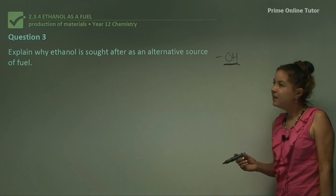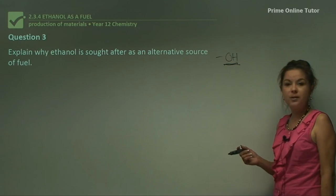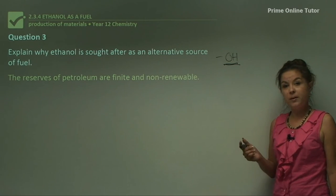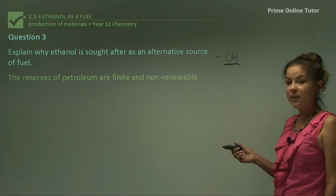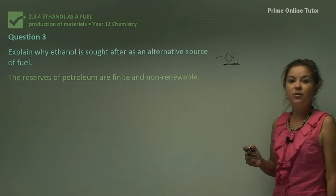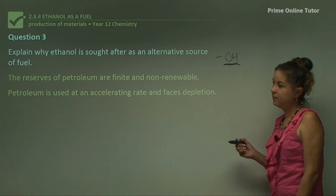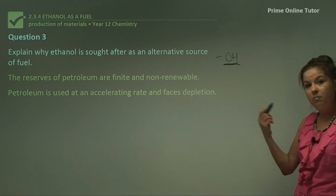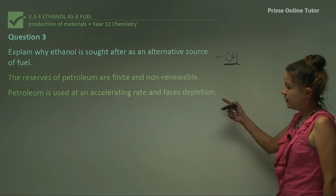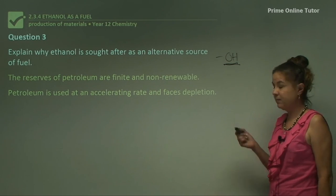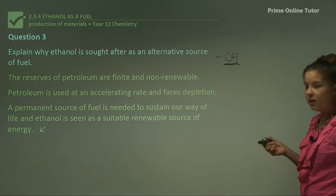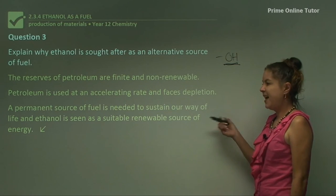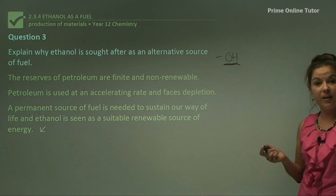Question 3: explain why ethanol is sought after as an alternative source of fuel. The reserves of petroleum are finite, which means they will run out, and they are non-renewable. Petroleum is used at an accelerating rate, especially in fast-growing countries, and it is facing depletion. A permanent source of fuel is needed to sustain our way of life, and ethanol is seen as a suitable renewable resource of energy.